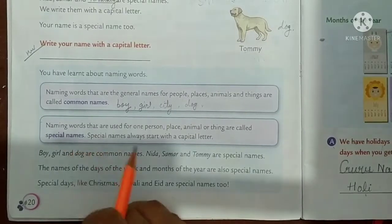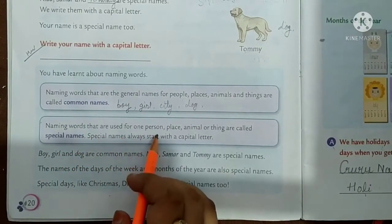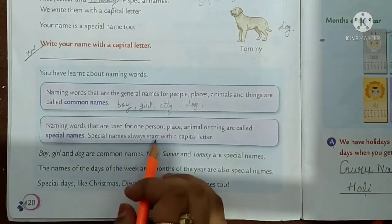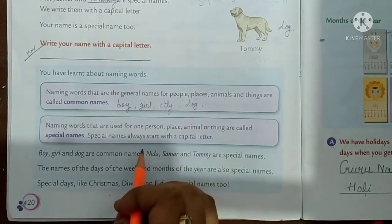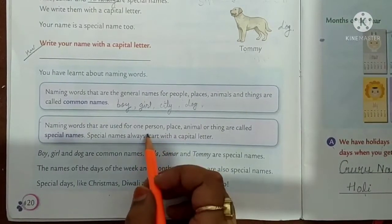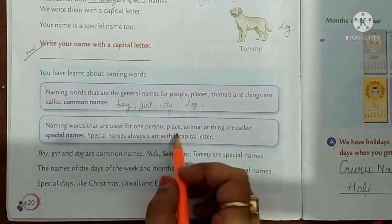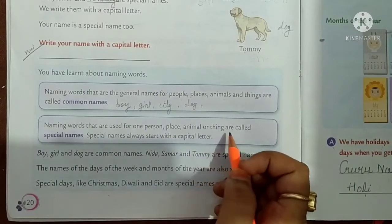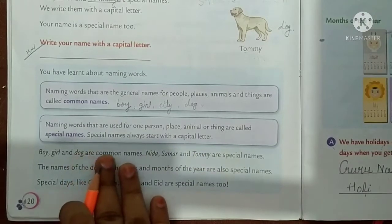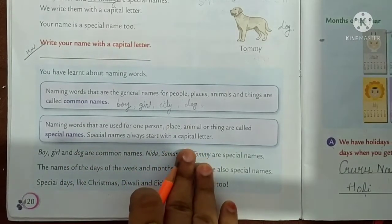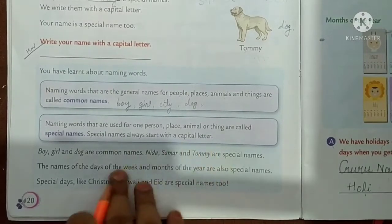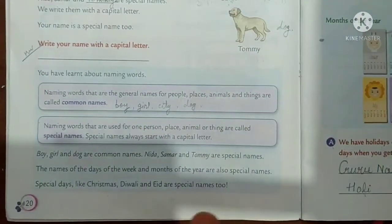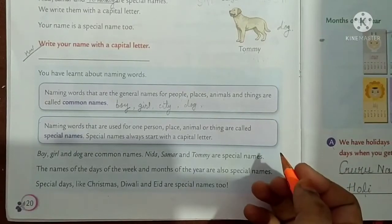What are special names? Naming words that are used for one person, place, animal or thing are called special names. Special names always start with a capital letter. A special name is particular to one person, place or thing. For example: Nida, Summer, Tommy, your name, your school name Mangla Public School — we write the first letter as capital.